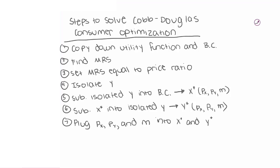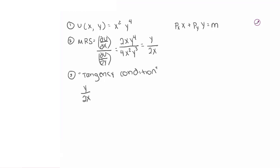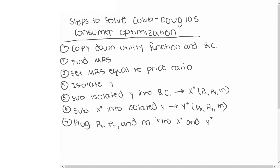Step three is to set the MRS equal to the price ratio. This is known as the tangency condition — this is where we ensure the consumer is as happy as possible. We take the MRS from step two, which is y over 2x, and set it equal to the price ratio px divided by py.